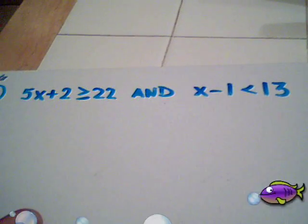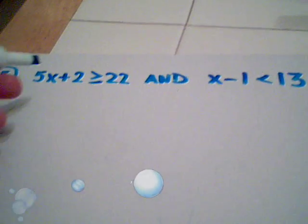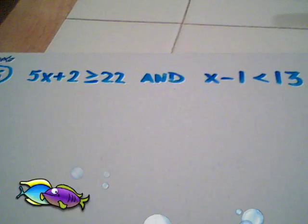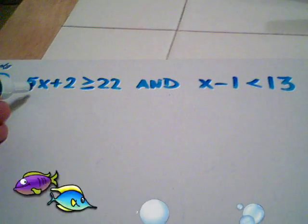Now the best way to solve a compound inequality is to use what I call helper graphs, and what I'm going to do first is solve this inequality for x, solve this inequality for x, and then we'll see how the word 'and' fits in.